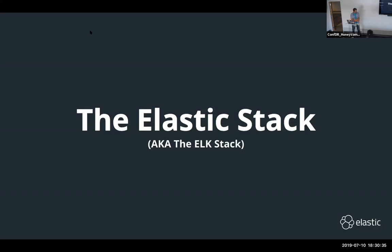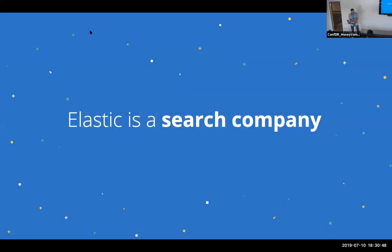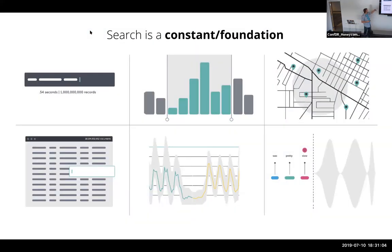Before we dive into observability, I'll give an overview of Elastic and the stack to level-set. We went public as a company last October, and that forced us to come up with a definition of what we are. The commonality of everything we do is search — we're a search company. When we talk about search, it's not only searching for text in an application like Wikipedia, which is powered by Elasticsearch. It's also zooming in a map, narrowing into a graph, or searching for anomalies in your data. All these are search use cases.